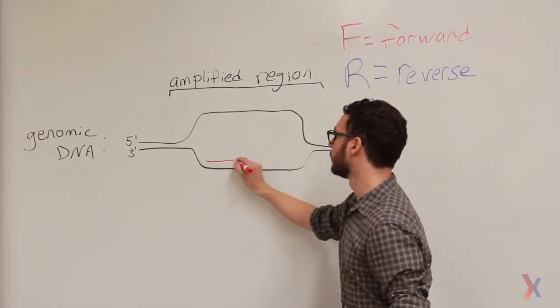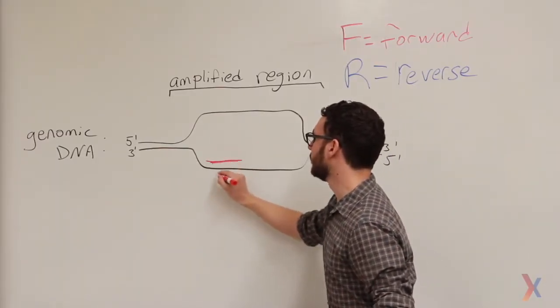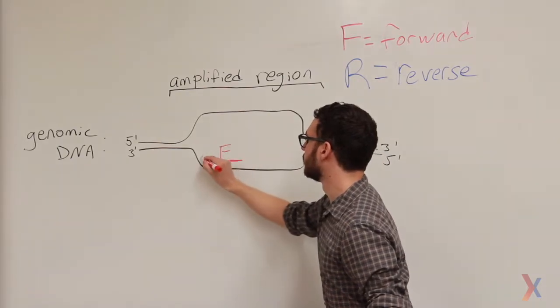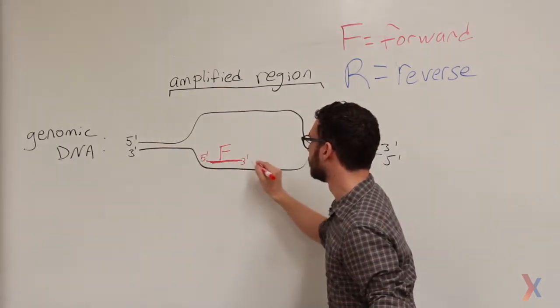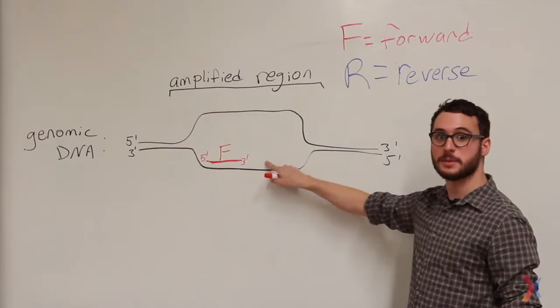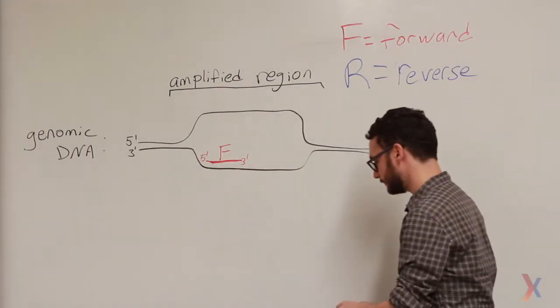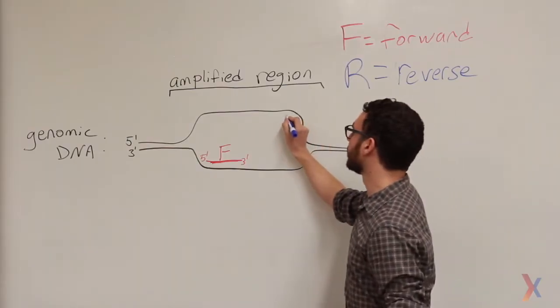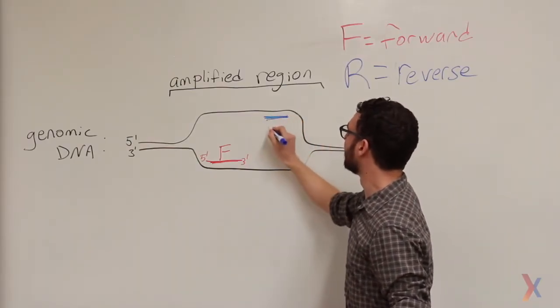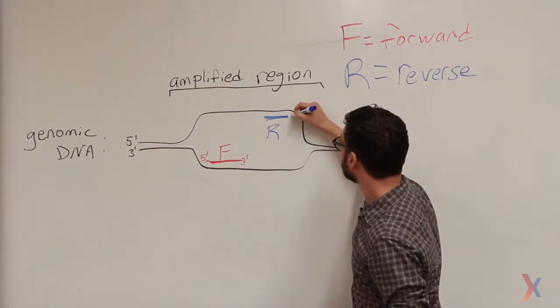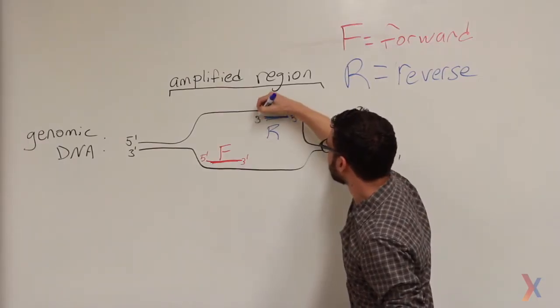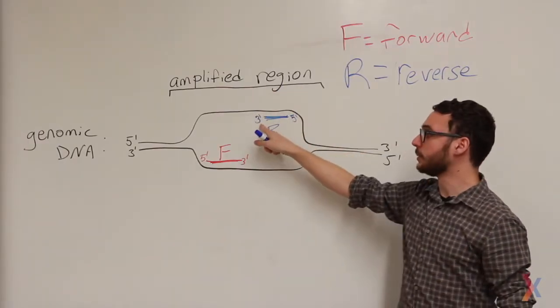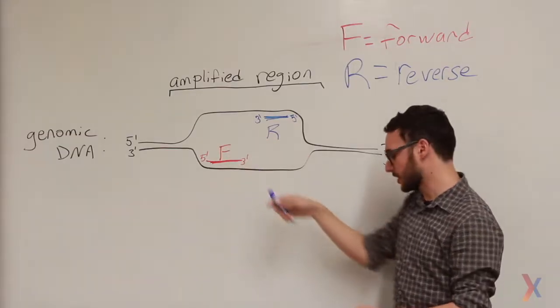My forward primer will anneal here, and DNA polymerase will amplify in the 3' direction. Then I'll design a reverse primer that anneals here. And again, DNA polymerase will amplify in the 3' direction.